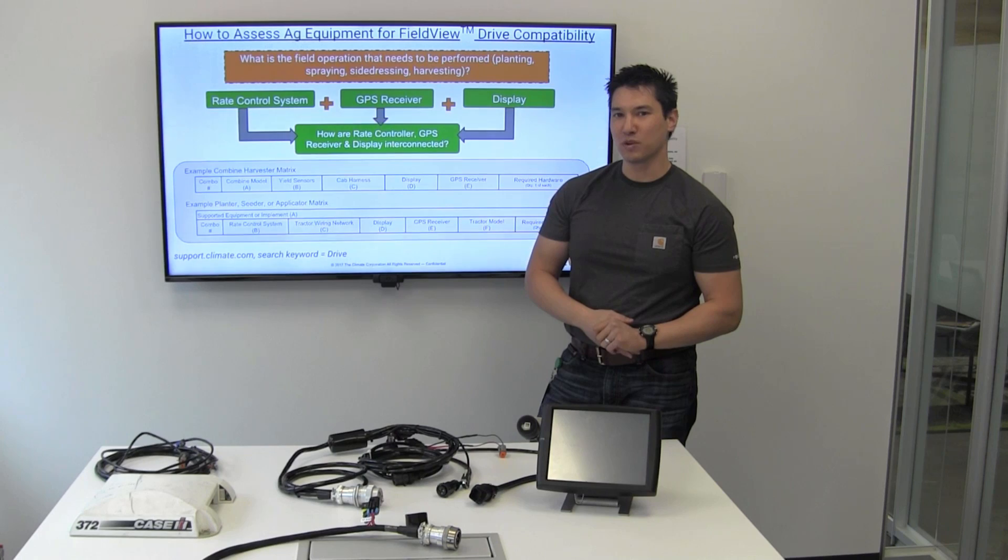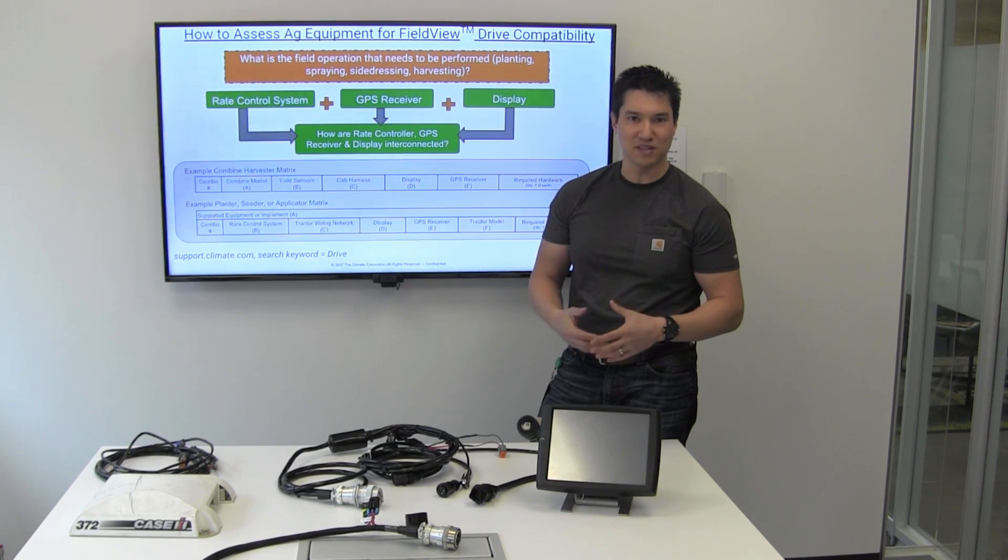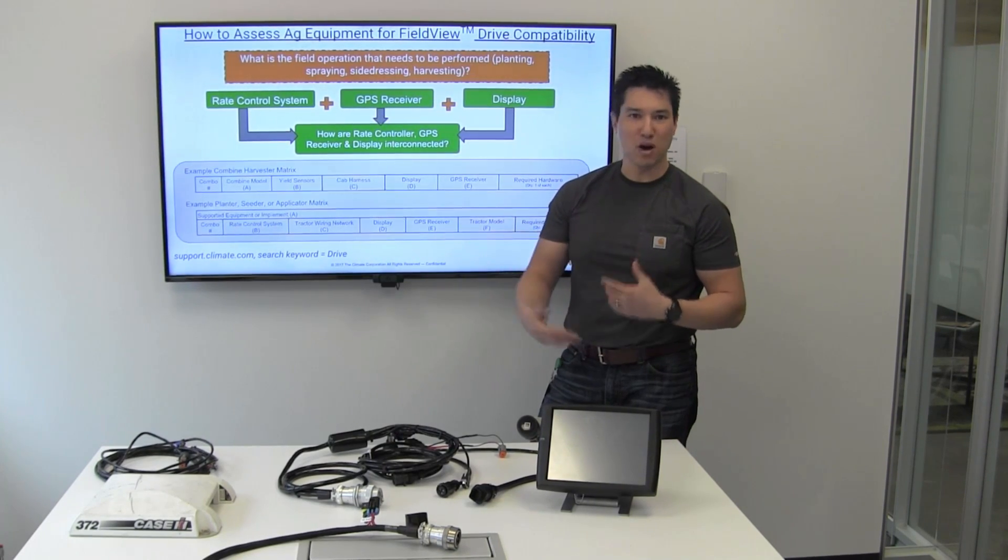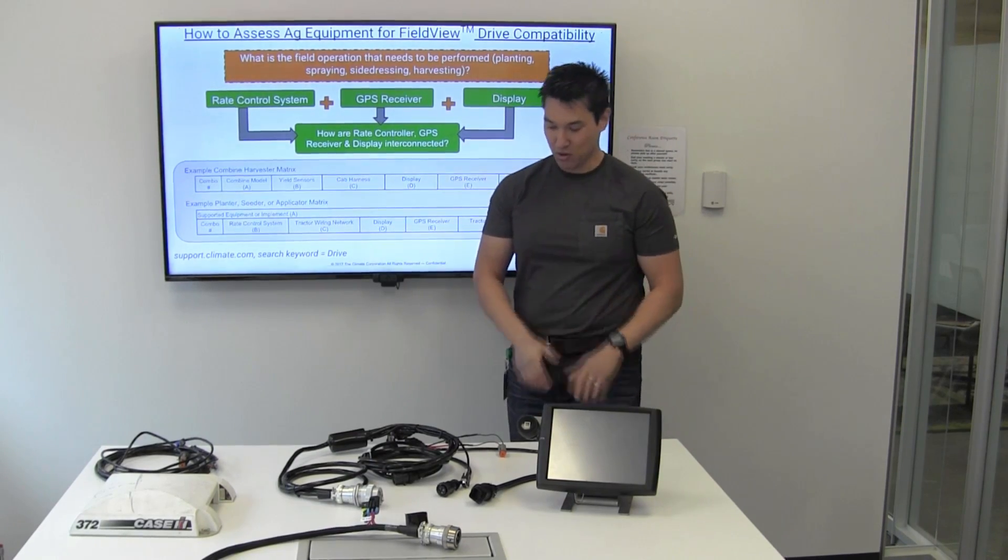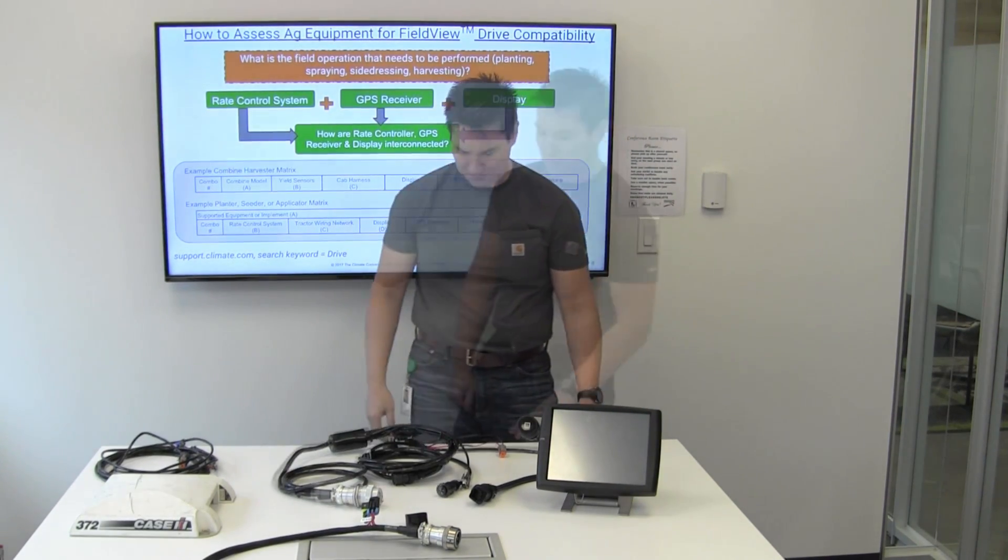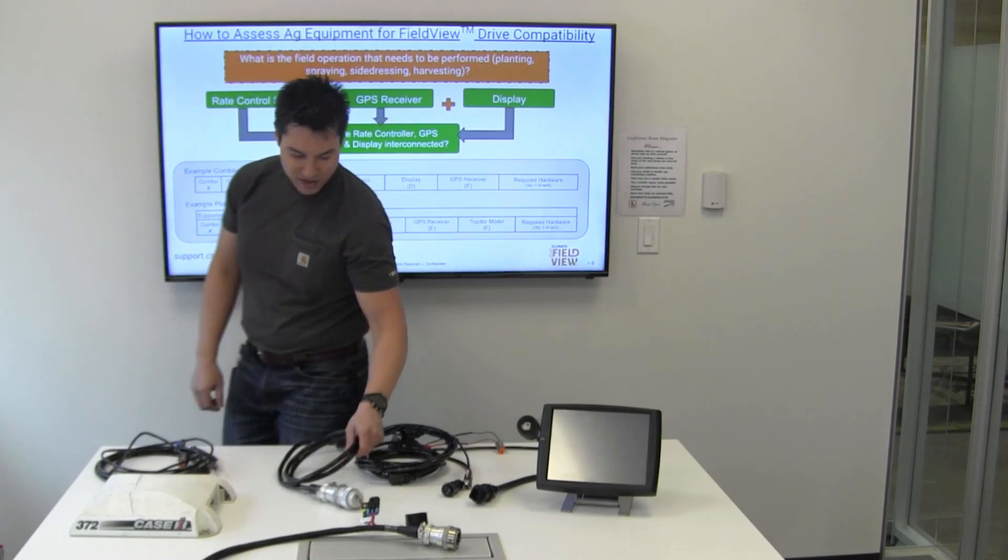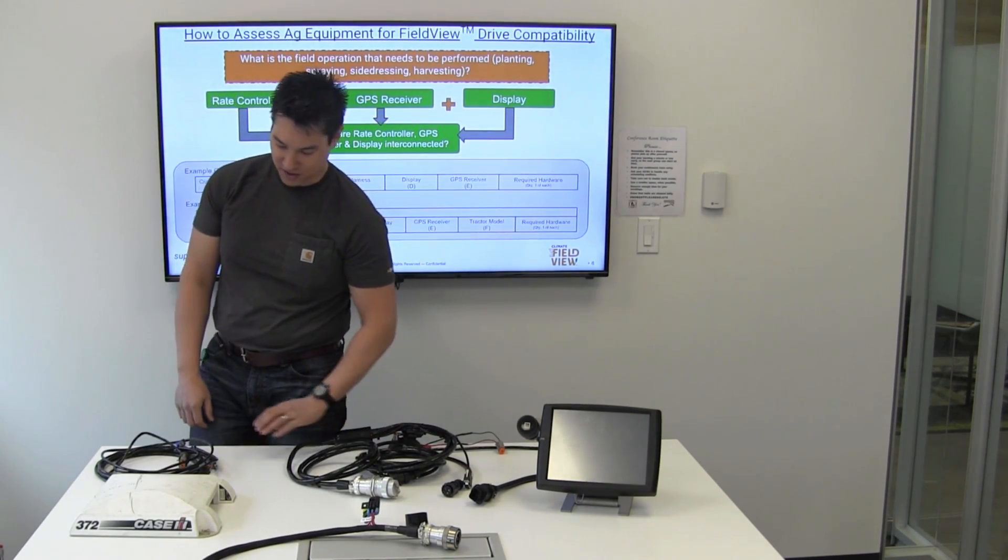But then there are some situations where you might have an older tractor that was built before the early 2000s that is not equipped with an isobus network. In order to run a modern planter or applicator, you probably have to equip it with an isobus harness.